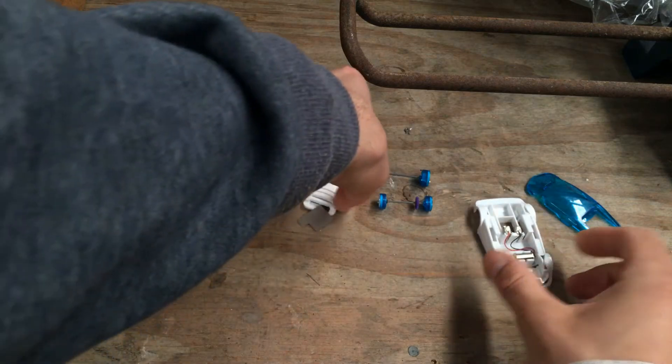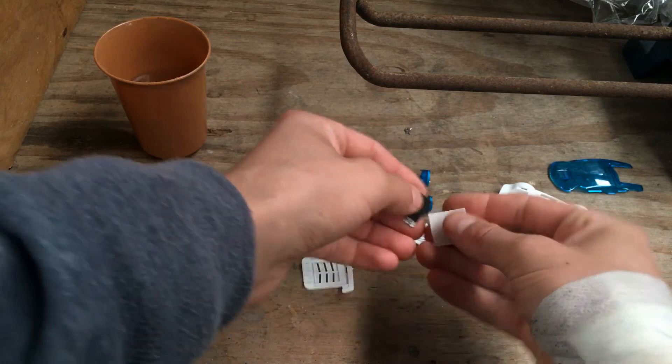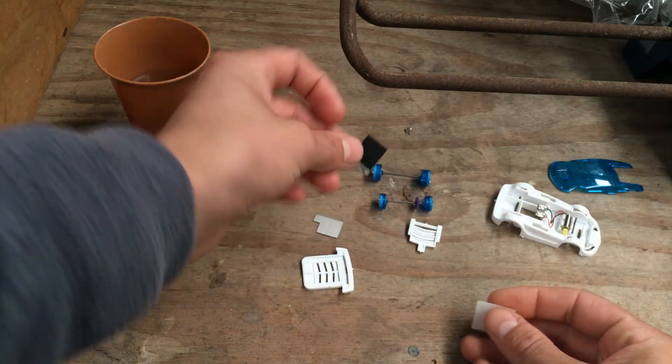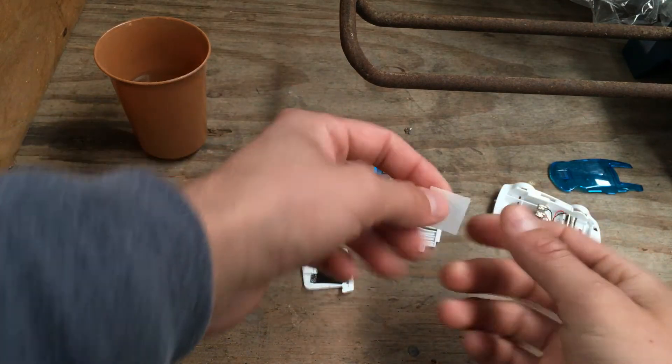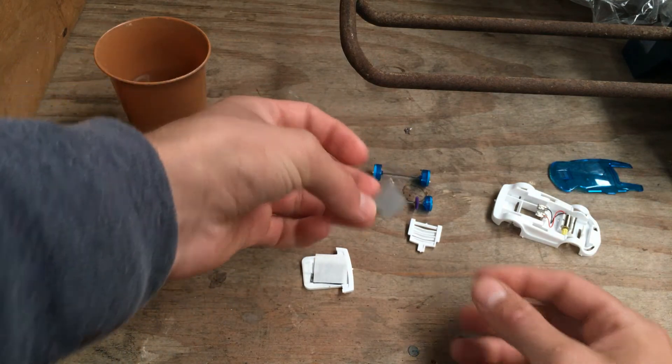So basically how this little cell works, here is an air cathode, here's some fabric, this soaks up the salt water and here's a little bit of magnesium.